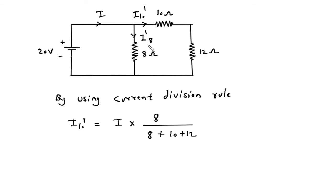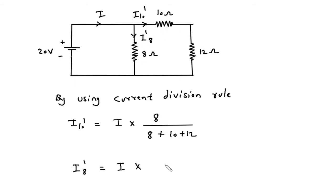Similarly, I8 prime is equal to the total current I multiplied by the parallel branch resistance, which is 10 plus 12. So I8 prime equals I into (10 plus 12) divided by (10 plus 12 plus 8).